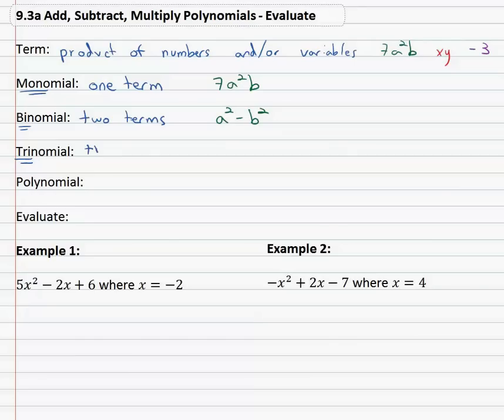Trinomial then has three terms. An example of that may be ax² plus bx plus c. Again the addition separating the three terms.